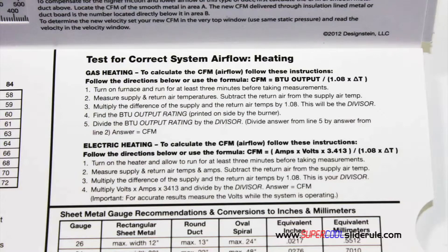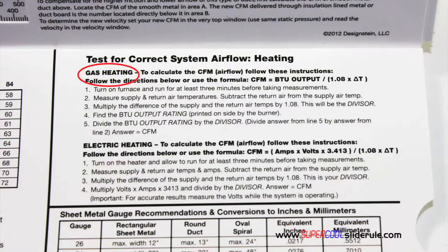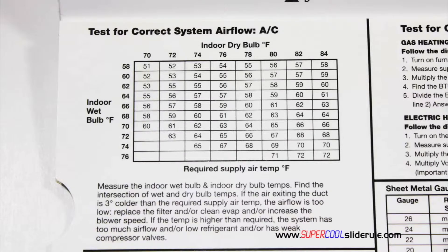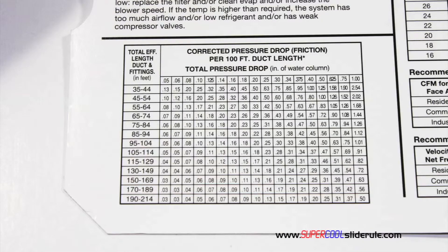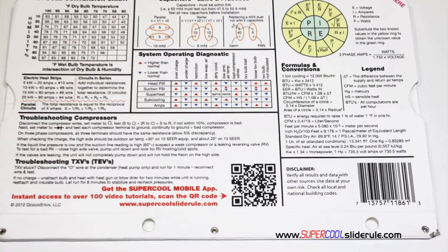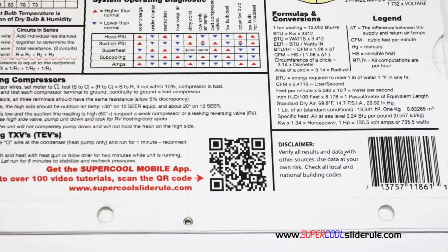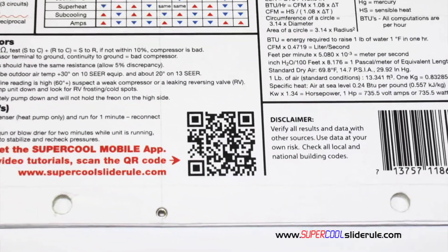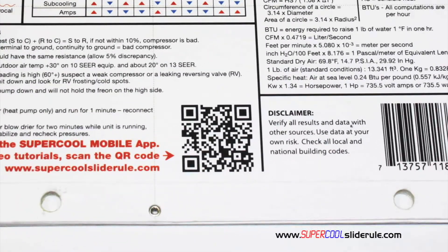It has step-by-step directions for determining airflow through a gas furnace, electric furnace, or an air conditioning unit. It has pressure drop multipliers for ductwork, as well as recommended velocities. And finally, the scanning of this QR code gives instant access to over 100 tutorials to assist the technician with every test and repair imaginable.